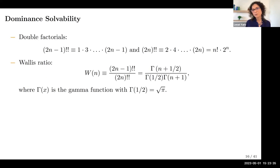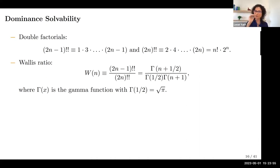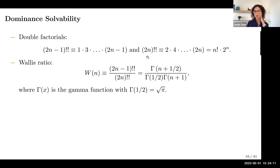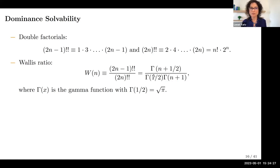I need one more piece of notation: the double factorial. The double factorial is like a factorial but multiplying terms of the same parity. For example, (2n−1)!! multiplies all odd numbers up to 2n−1, and (2n)!! multiplies all even numbers up to 2n. The Wallis ratio is just the ratio of two consecutive double factorials, and it relates to the gamma function, inheriting some nice properties.